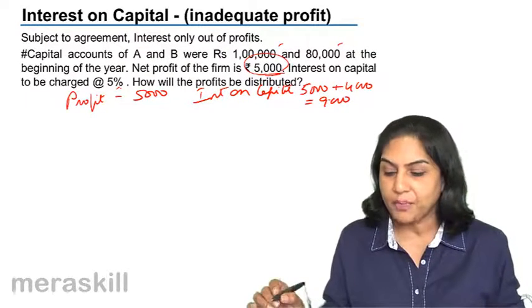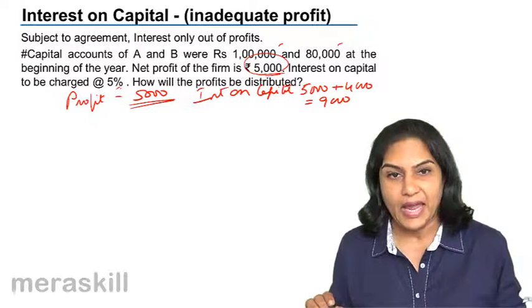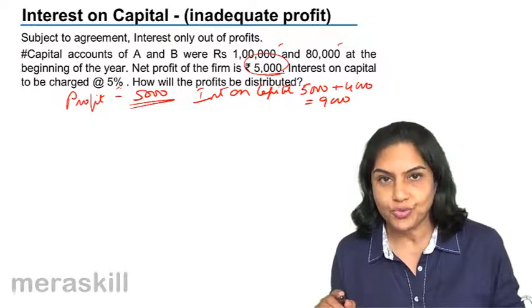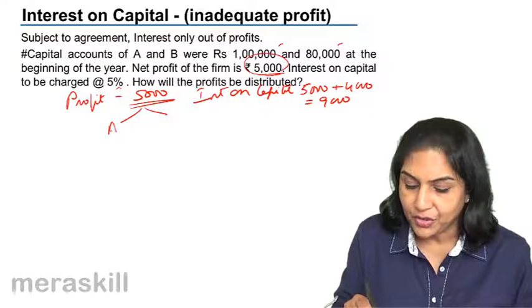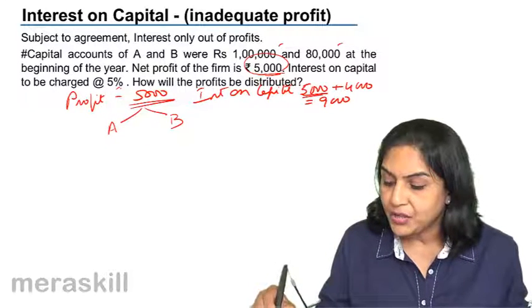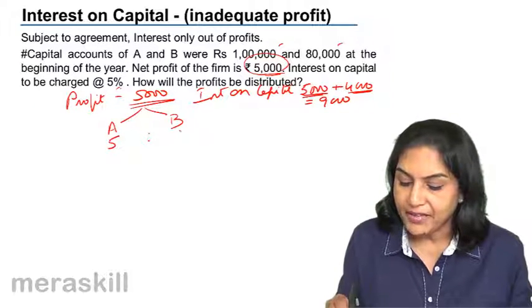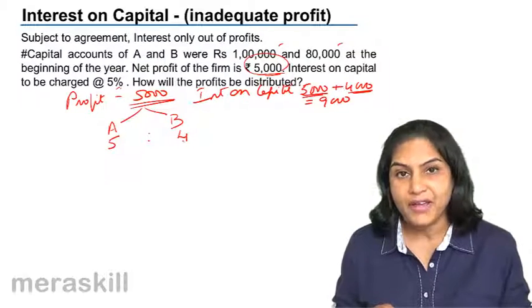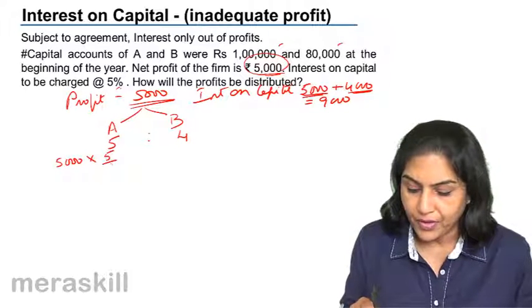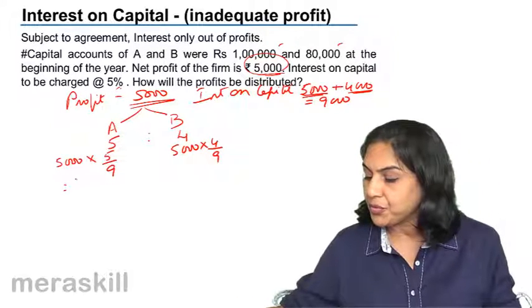Since we cannot pay 9,000 as interest on capital and the only available amount is 5,000, this 5,000 has to be given to A and B in the ratio of the interest which is due to them. 5,000 is what is owed to A and 4,000 is what is owed to B, therefore in the ratio of 5:4. So A would get 5,000 × 5/9 and B would get 5,000 × 4/9. This is how this profit would be distributed.